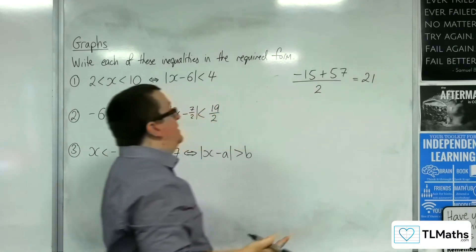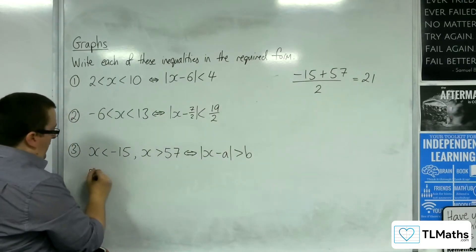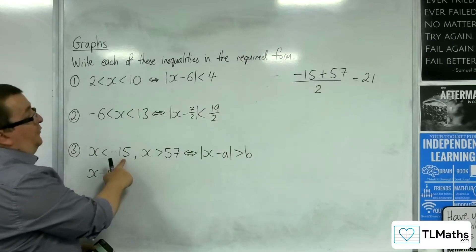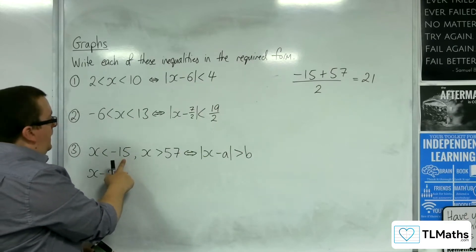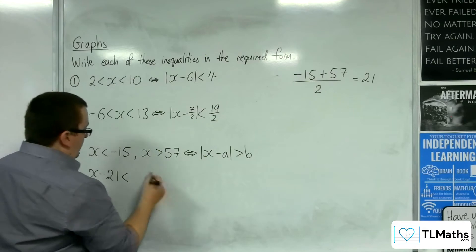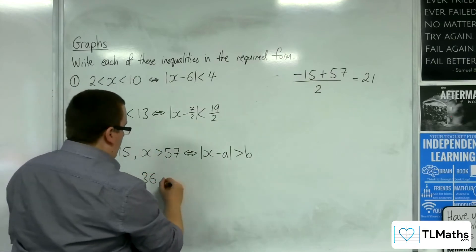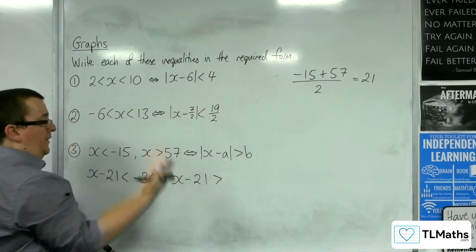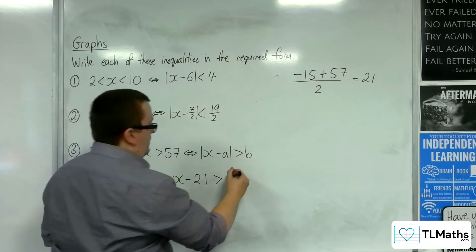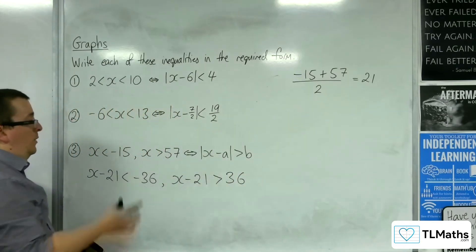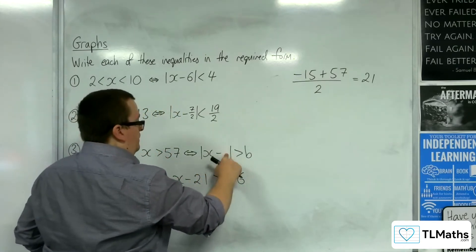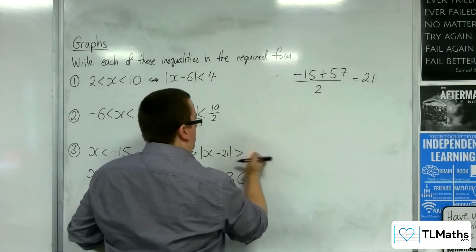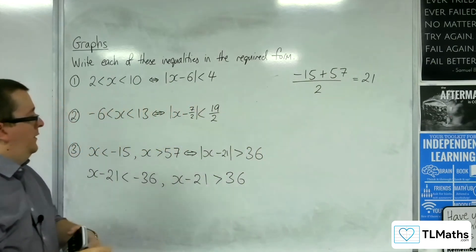We're going to subtract 21 from all the elements. So, x take away 21 is less than minus 15 take away 21, which is going to be minus 36. And x take away 21 is greater than 57 take away 21, which is positive 36. So, the A here is 21, and the B here is 36.